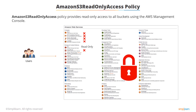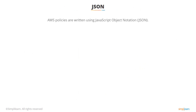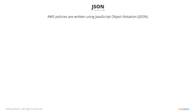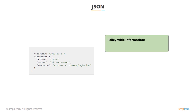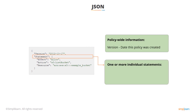AWS policies are written in JSON – JavaScript Object Notation – which stores data in easily readable key-value pairs. Here's an example of an AWS policy written in JSON. At the top, there is some policy-wide information that helps identify details about the policy, such as the version. Then there's the statement section – the meat of the JSON policy – where the policy rules are written. In this example there are three entries: the effect, the action, and the resource.